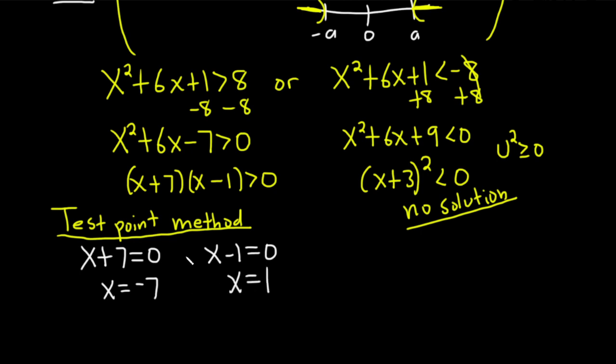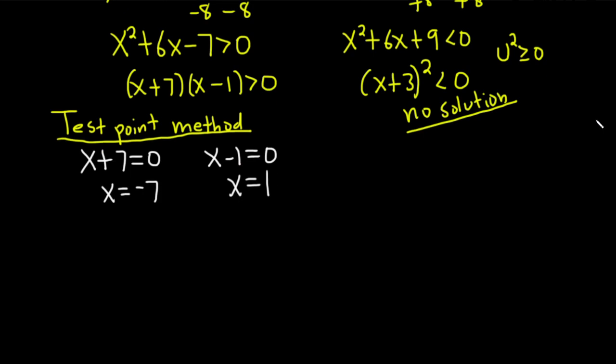So now we can just plot these on a number line, and then pick test points. So there's my number line. You want to pick one number in each of these intervals and plug it into your inequality. If it's true, you're going to shade. If it's not true, you don't shade. So let's just go ahead and do it so you see what I mean.